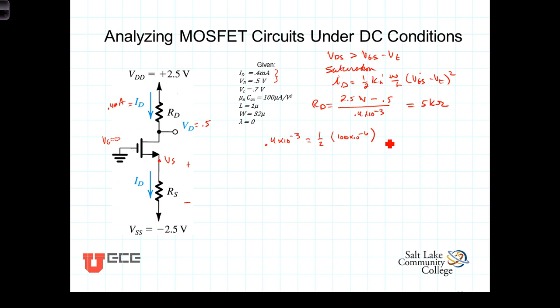Let's see here. Times, where are we at? W over L. W is 32 microns. L is 1 micron. So, W over L will be 32 times, I'm just going to write this as VOV squared for now. When you go through and calculate this,